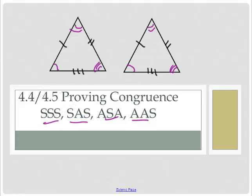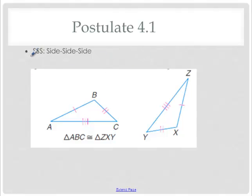We're going to learn how those work, and then in the next video we'll start doing proofs. The first one is SSS — side, side, side. S stands for side, A stands for angle. If we know that three pairs of sides — one pair, two pairs, and three pairs — are congruent, the triangles are congruent.